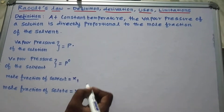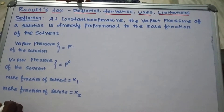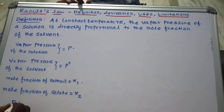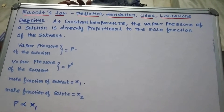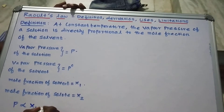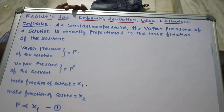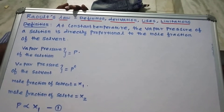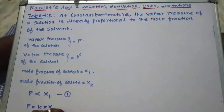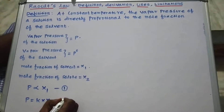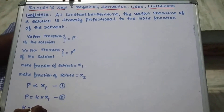The vapour pressure of the solution is equal to P. The vapour pressure of the solvent is equal to P0. The mole fraction of solvent is equal to X1, and the mole fraction of solute is equal to X2. According to Raoult's law, at constant temperature, P is directly proportional to X1. This is equation number 1.